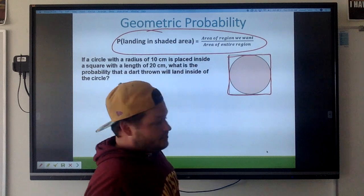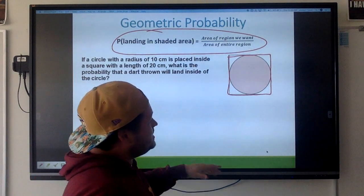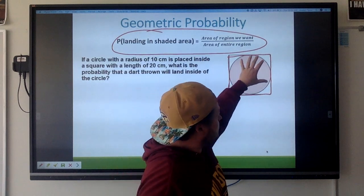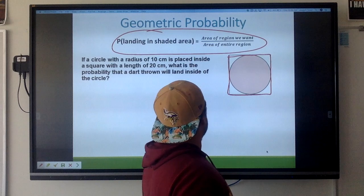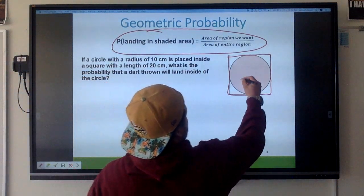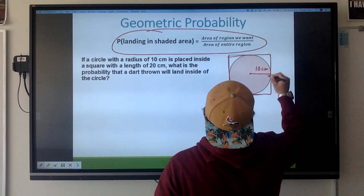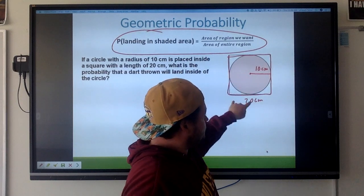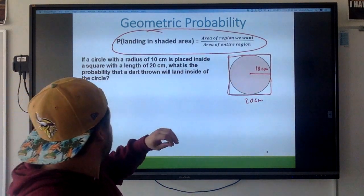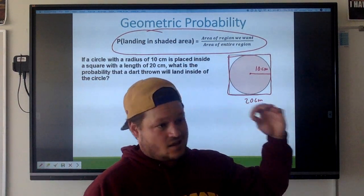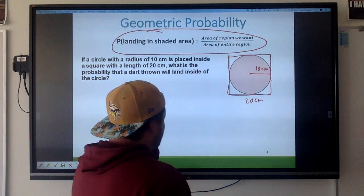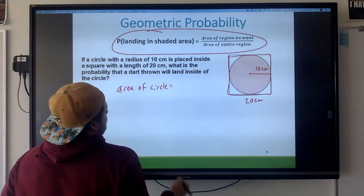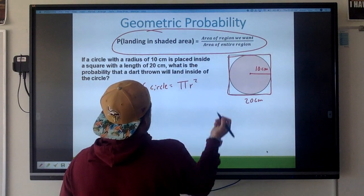My total number of outcomes, or my denominator, is going to be the area of this entire shape. So what we need to do here is we need to find the area of the circle and put that over the area of the square. The circle is what we want, where we want to land. The square is a total number of possibilities. So let's take a look here: a circle with a radius of 10 centimeters is placed inside a square with a length of 20 centimeters. That makes sense, right? Because if this is the radius, then the diameter would be 20, which matches. So that's all good. What is the probability that a dart thrown will land inside of the circle? So let's find the area of the circle.